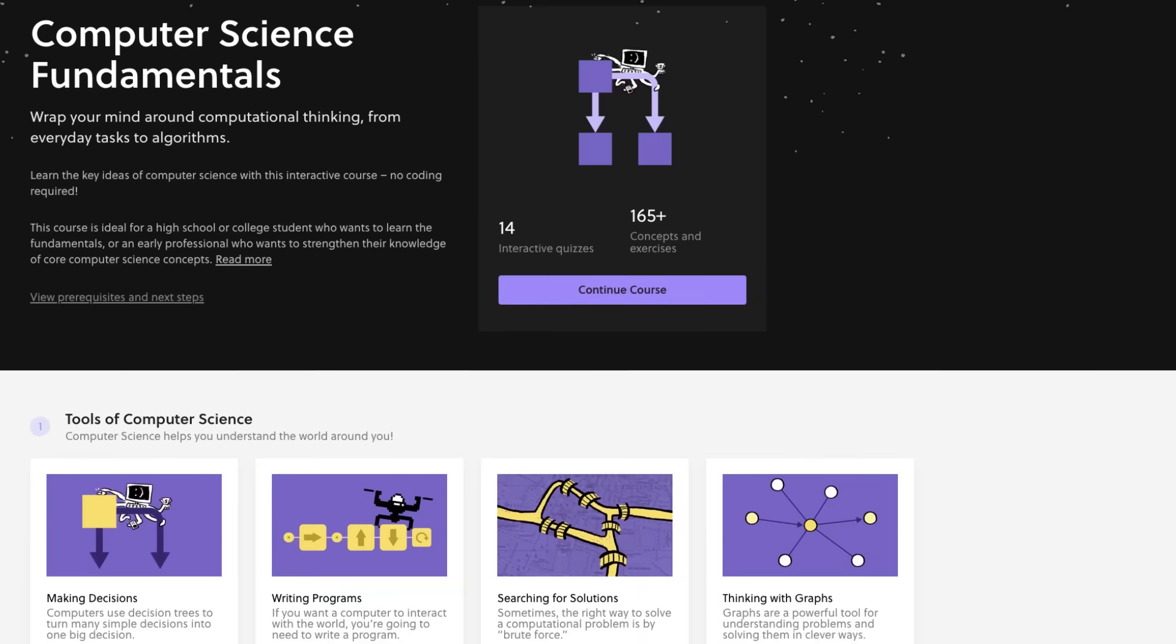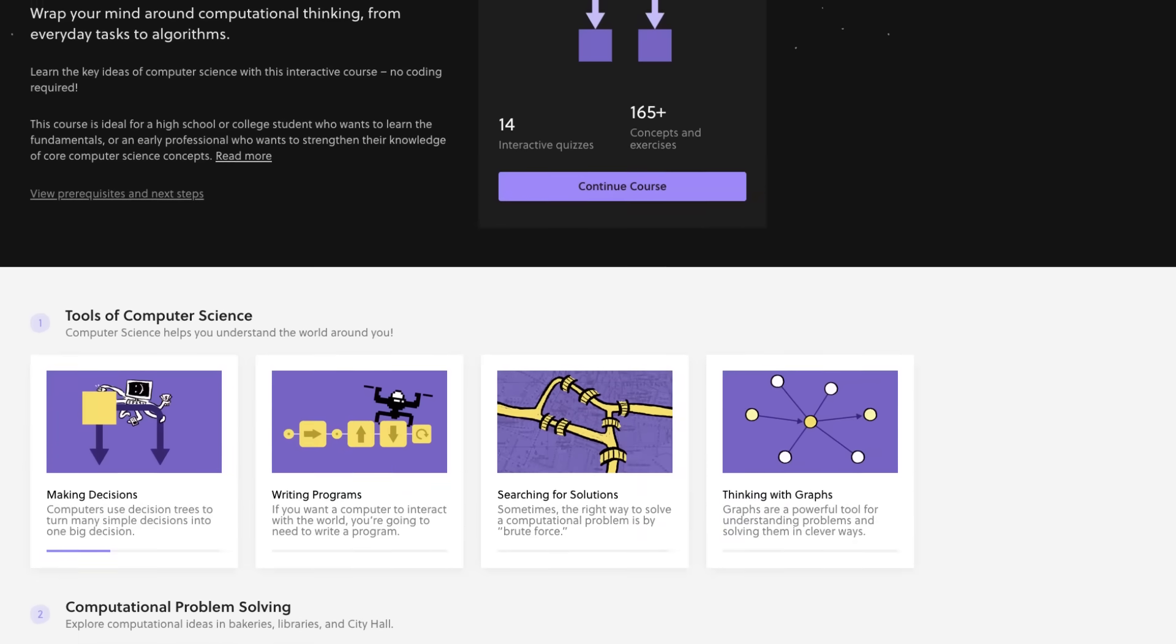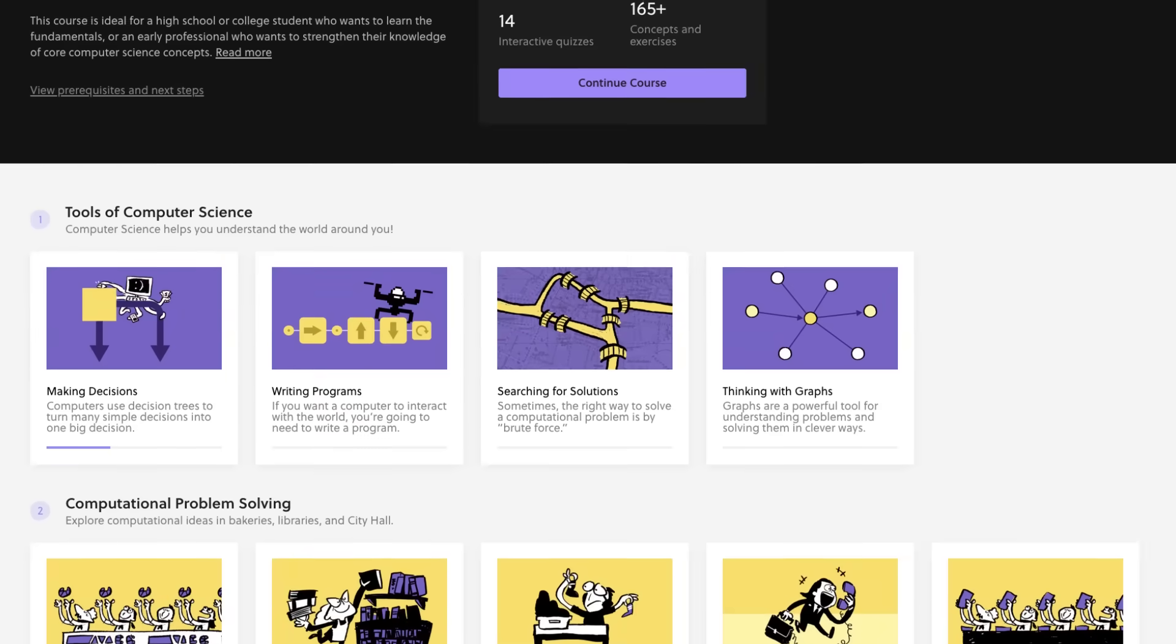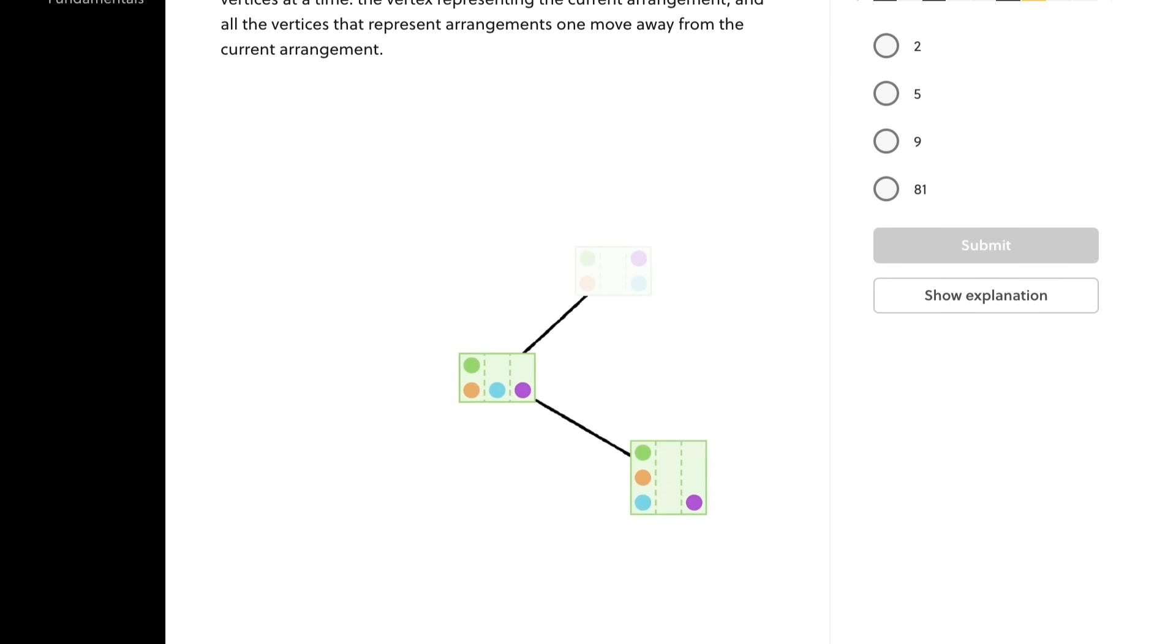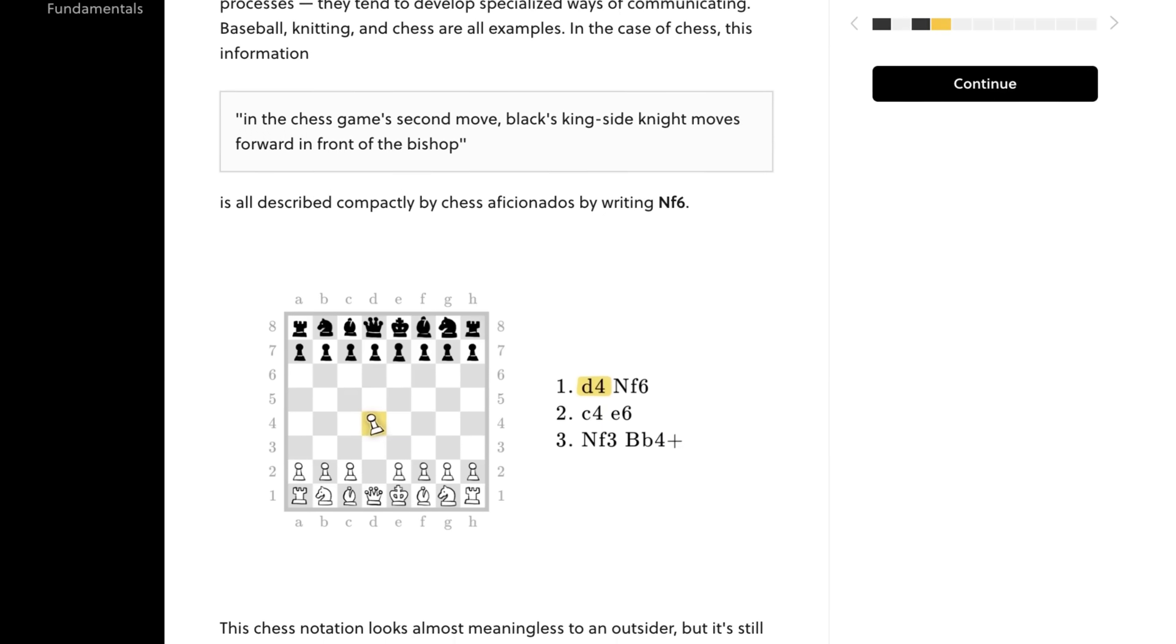This video was an origin story about one of the most fascinating and relevant fields of study. But there is so much more to computers and algorithms that's worth exploring. If you'd like to get a real handle on the fundamentals of computer science, hearing about it in a video probably isn't enough. But there is good news. You can learn about it the same way I did through interactive courses on Brilliant. In this computer science fundamentals course, you can learn how to write programs, search for solutions using the computational method of brute force and make your own algorithms.